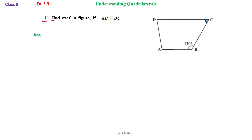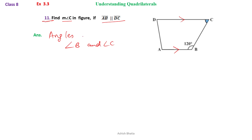Exercise 3.3, question number 11: find the measure of angle C in the figure where AB is parallel to DC. Since AB is parallel to DC, when two sides are parallel, angle B and angle C are adjacent angles. Adjacent angles B and C are supplementary.